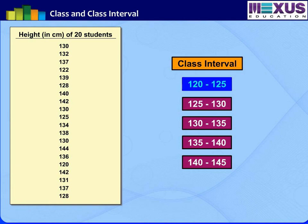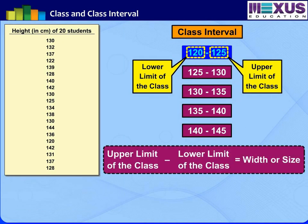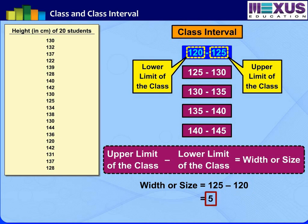In class 120 to 125, 120 is called the lower limit of the class and 125 is the upper limit of the class. The difference between the upper and lower limit is called the width or size of the class interval. In the above example, the width of the class interval is 125 minus 120, equal to 5.